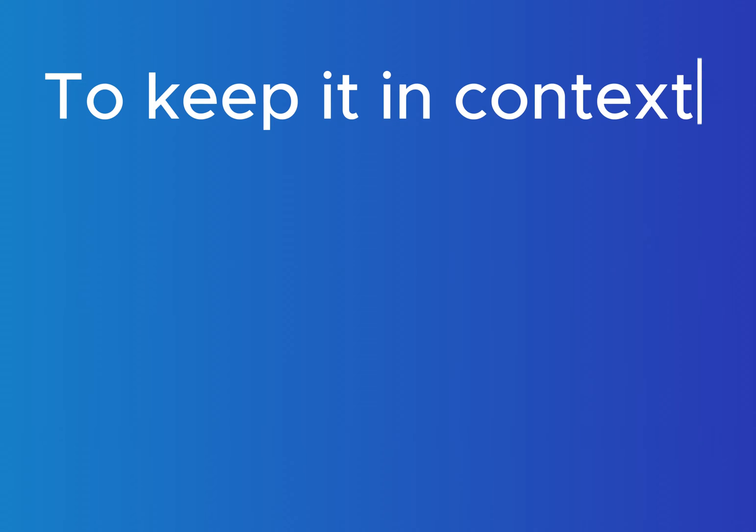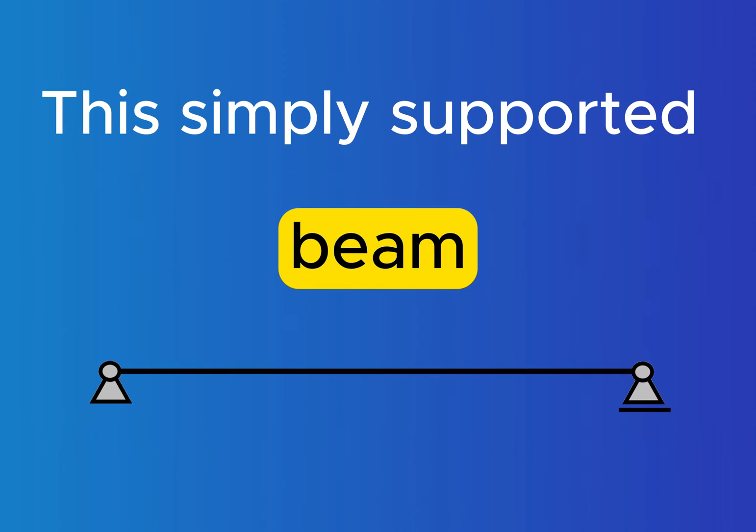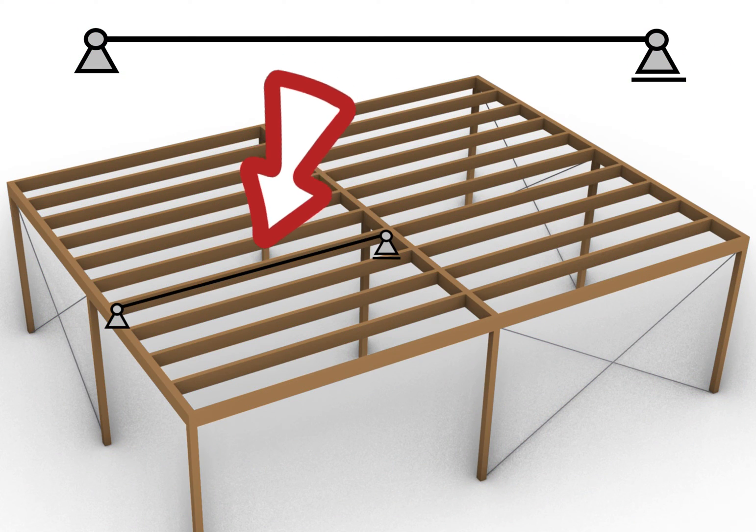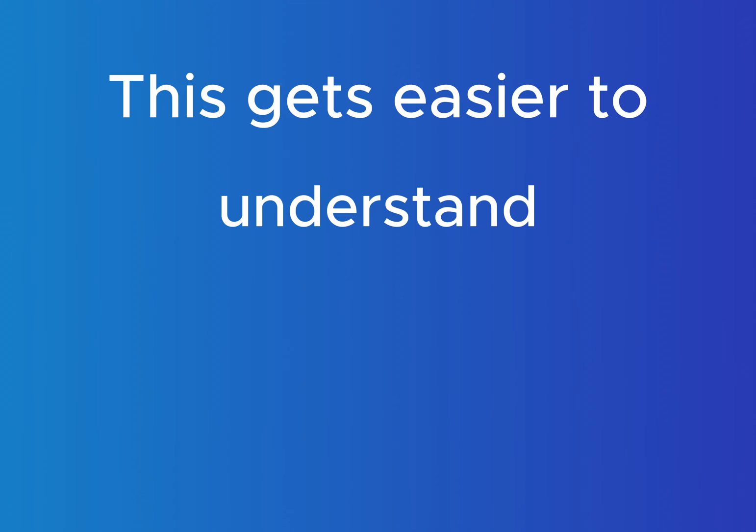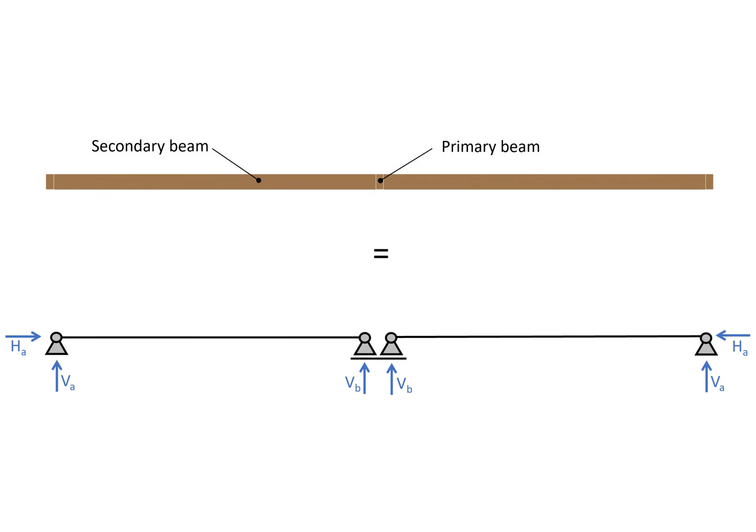To keep it in context with the overall system of the flat roof, this simply supported beam can be a secondary beam in a flat roof. This gets a bit easier to understand when we visualize the secondary beams in a 2D section. We can see that the secondary beams are supported by the primary beams.